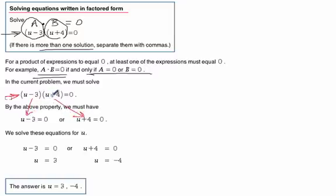If (u - 3)(u + 4) = 0, then u - 3 = 0 or u + 4 = 0. These are easy to solve. We solve each equation to get u = 3 or u = -4.